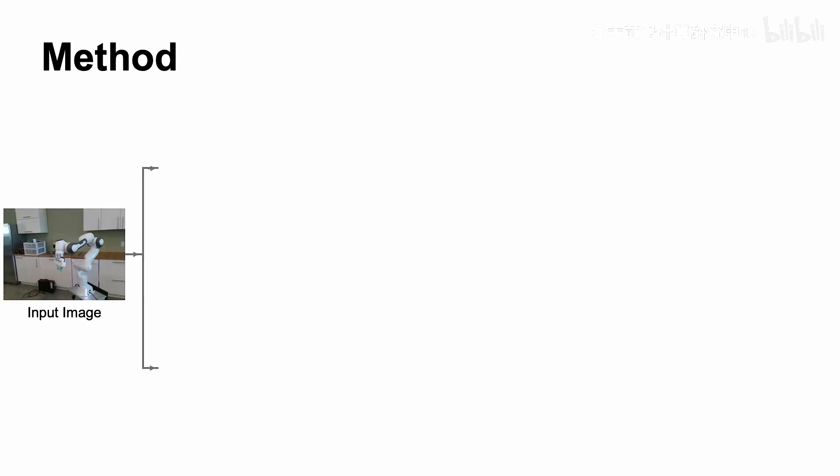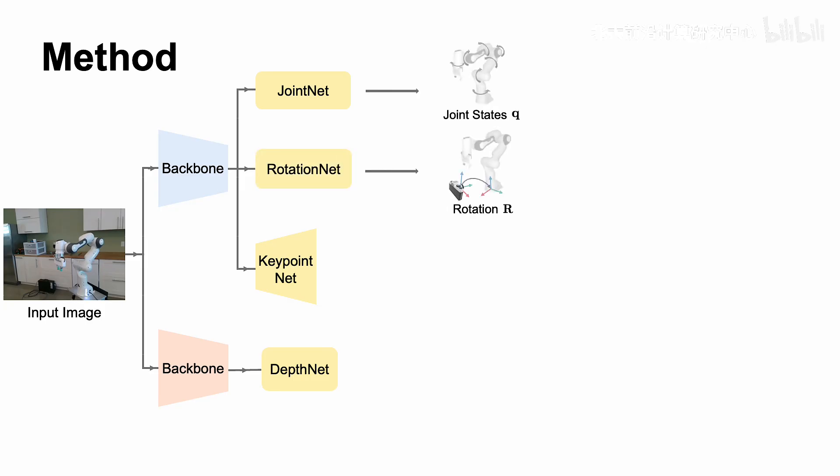Our method decomposes the problem into estimating robot joint state parameters, camera-to-robot rotation, keypoint locations, and root depth. Specifically, JointNet estimates the joint state parameters, and RotationNet estimates the camera-to-robot rotation. The keypoints are defined at the joint articulations, and one keypoint is designated as the robot root.